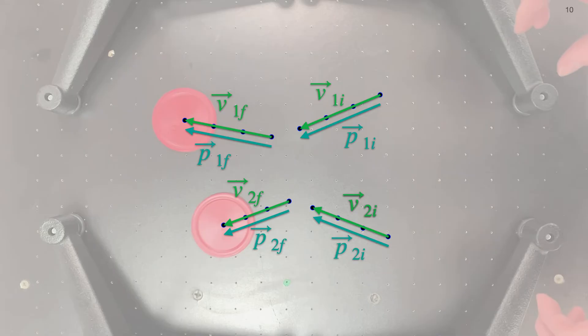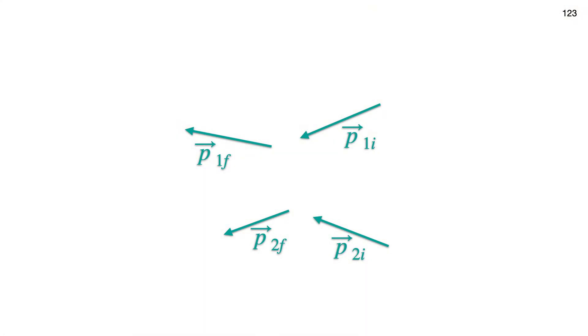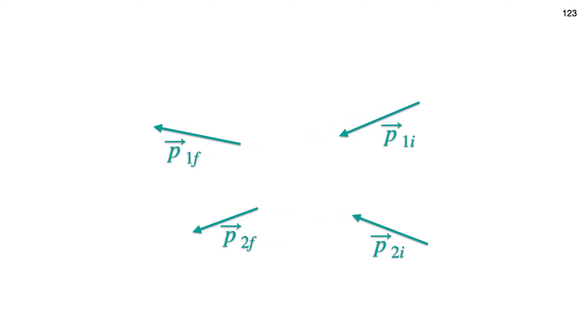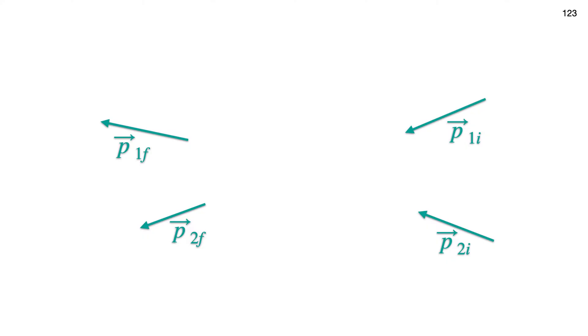Let's look only at the momentum vectors and ignore everything else. First, we'll rearrange them, putting the final vectors on the left and the initial vectors on the right. And then we'll add them tip to tail in order to show the total system momentum before the collision and after the collision.